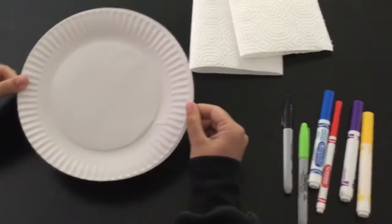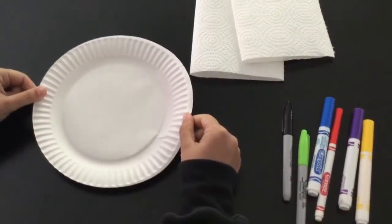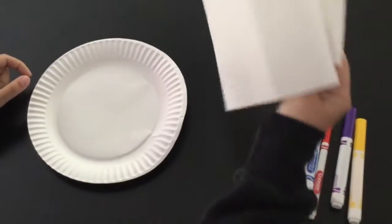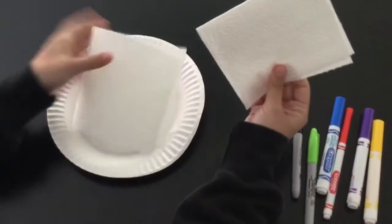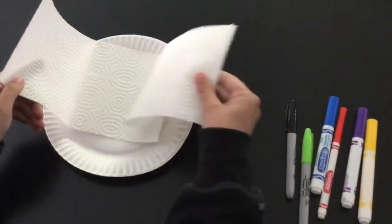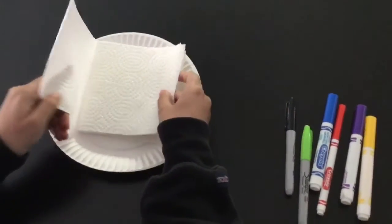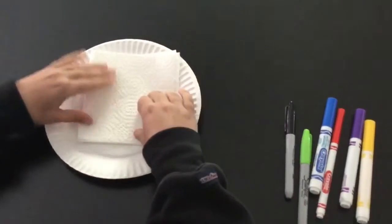Okay so I got a paper plate so that when I start drawing and if it goes through the paper towel it doesn't go under the table. You're going to take the paper towels, you're going to open this one up and put this one inside so it kind of looks like a book.